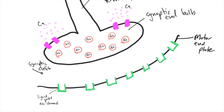Now that we have the basic components of the drawing, let's go through what happens with the propagation of an action potential and exactly how we stimulate this muscle through a depolarization event. Let's put it to steps.